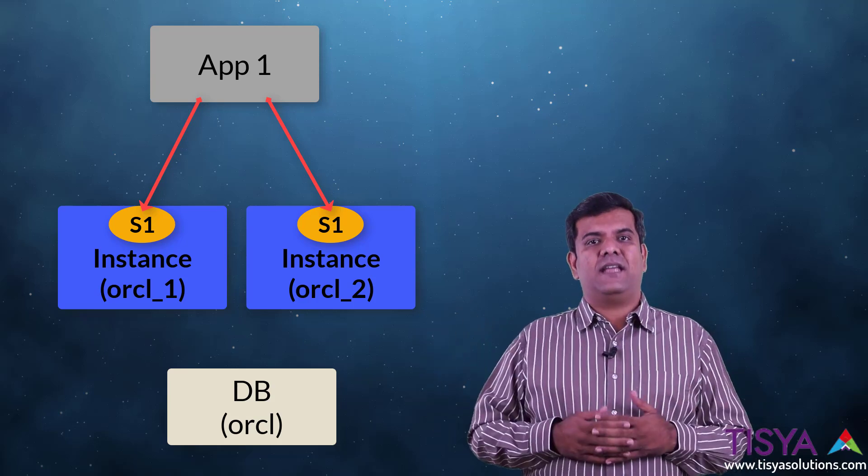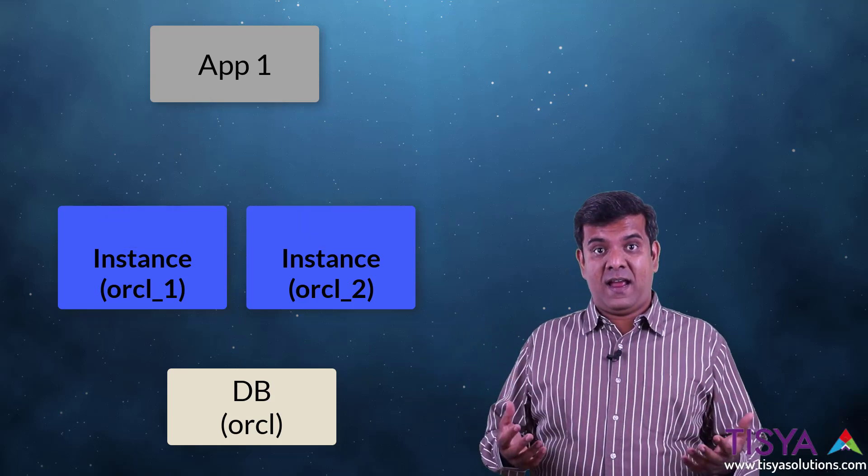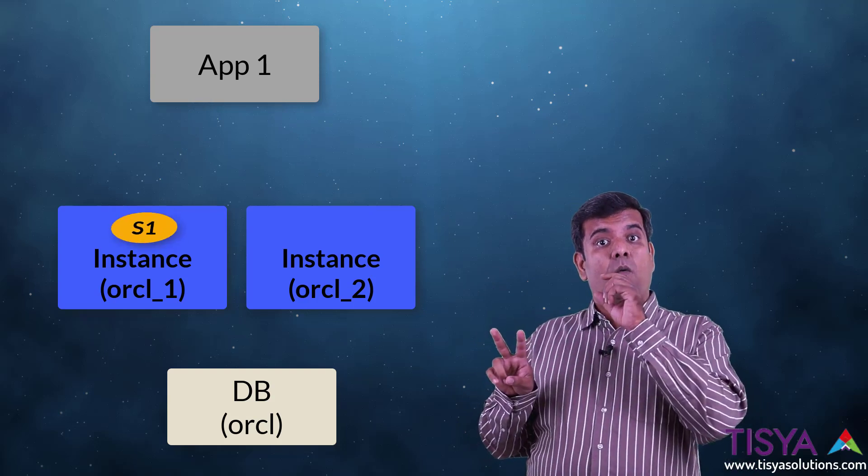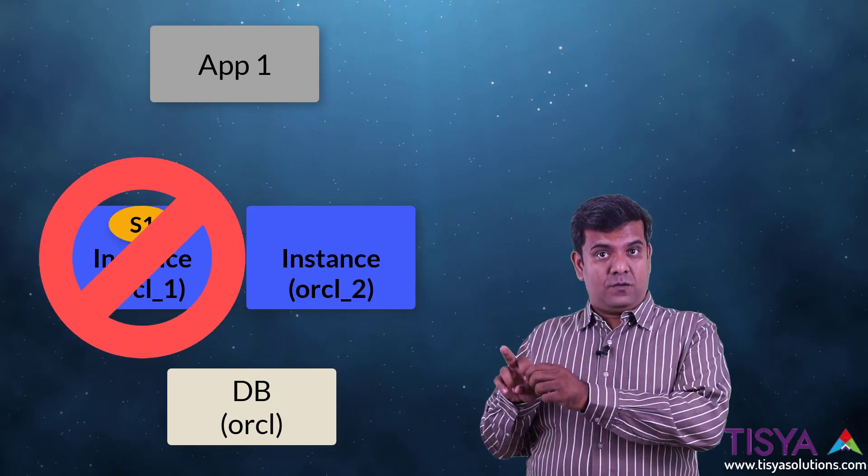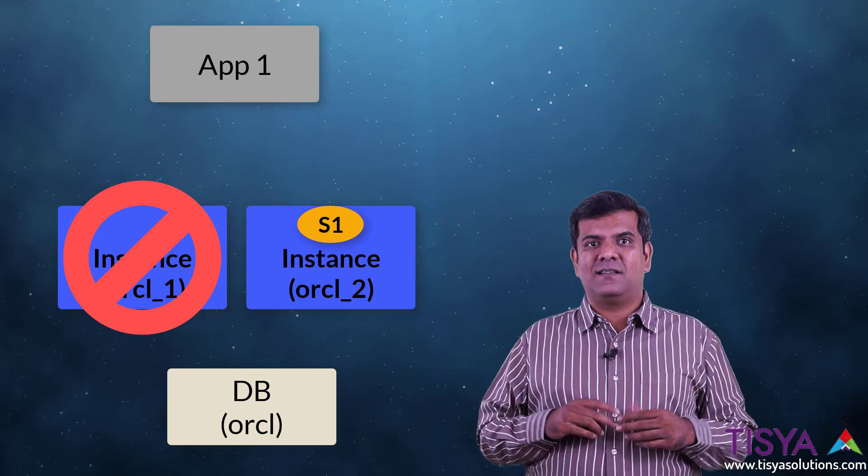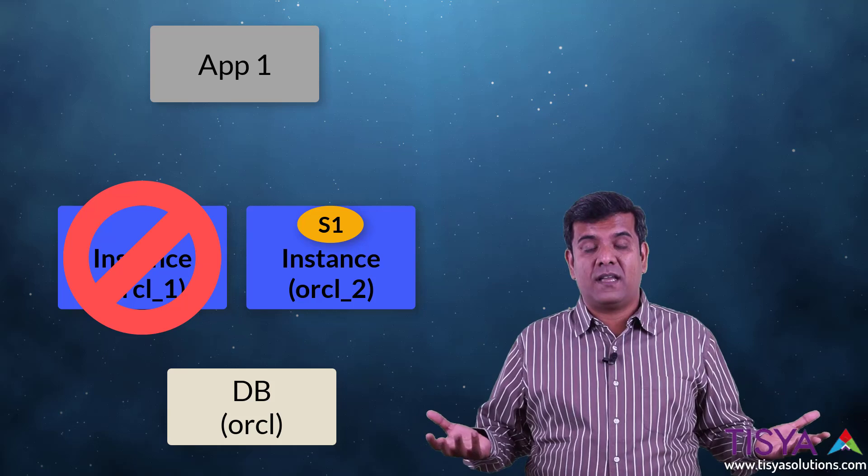On the other hand, I could have had two instances, but only one instance is running the service, and if that instance goes down, you can ask the service to failover to the available instance. Thereby, failover can also be achieved using services. This becomes an underlying framework with RAC and Data Guard.